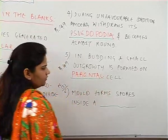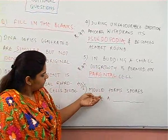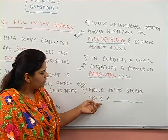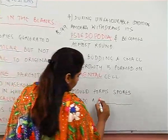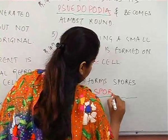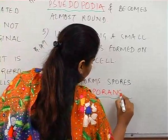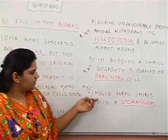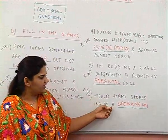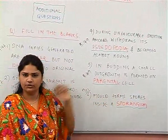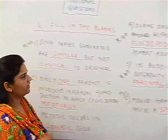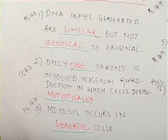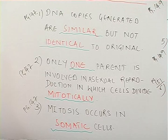The sixth question from page 151: mold forms spores inside a sporangium. These are the first six additional fill-in-the-blank questions from this chapter — make a note of these or mark them in your textbook.